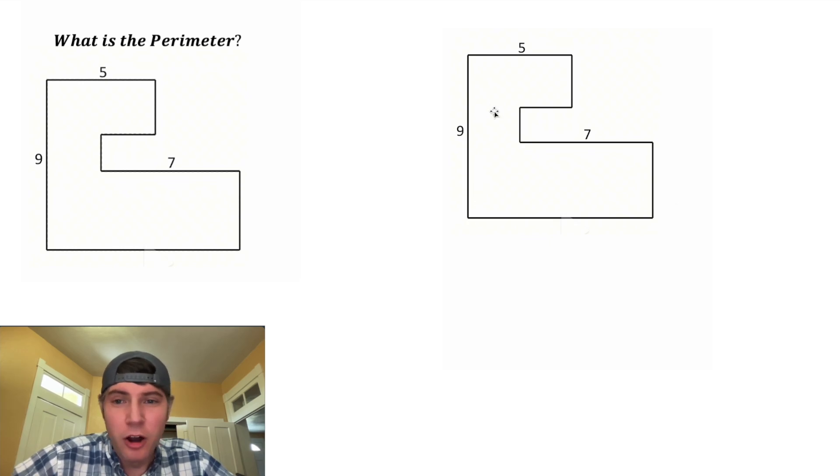What I really like about this one is all it gives us is the 9, the 5, and the 7, and it does not say it's drawn to scale. That means it could have a lot of different configurations. Here's an animation showing the different possibilities. So does that mean that all these variations have the exact same perimeter? Let's find out.